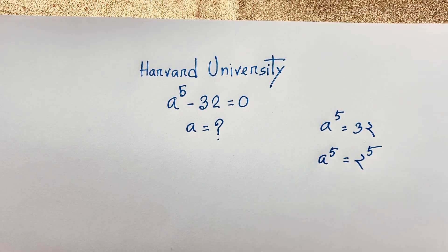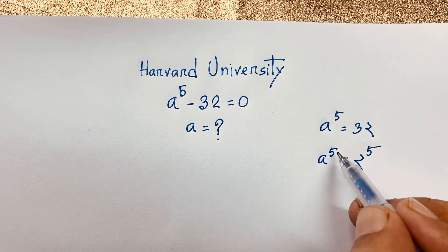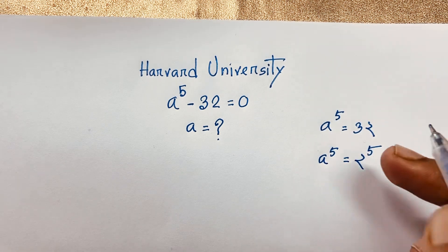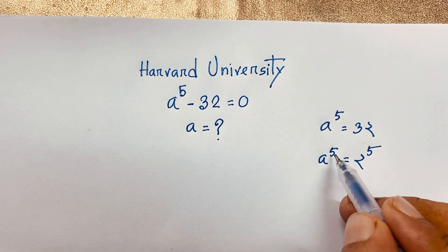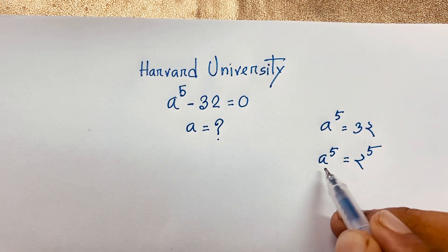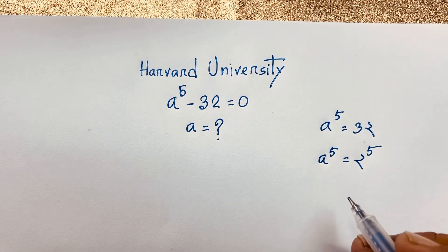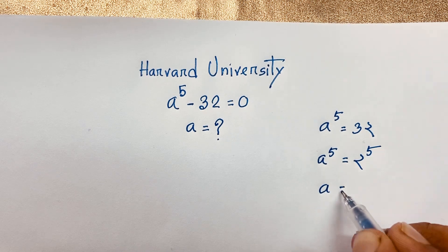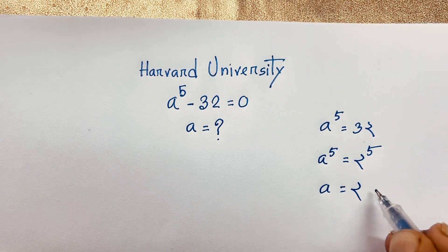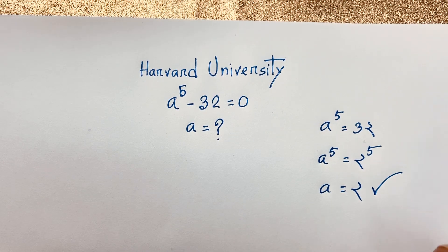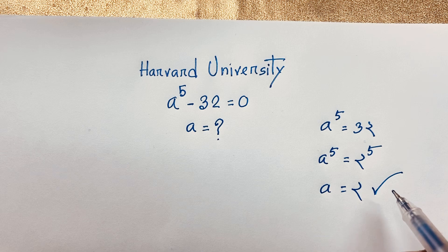Now at this point, the exponent is the same — this 5 and this 5 — so since the exponents are the same, the bases must be equal. Therefore a is equal to 2. This is our final real answer, the value of a in this exponential equation.